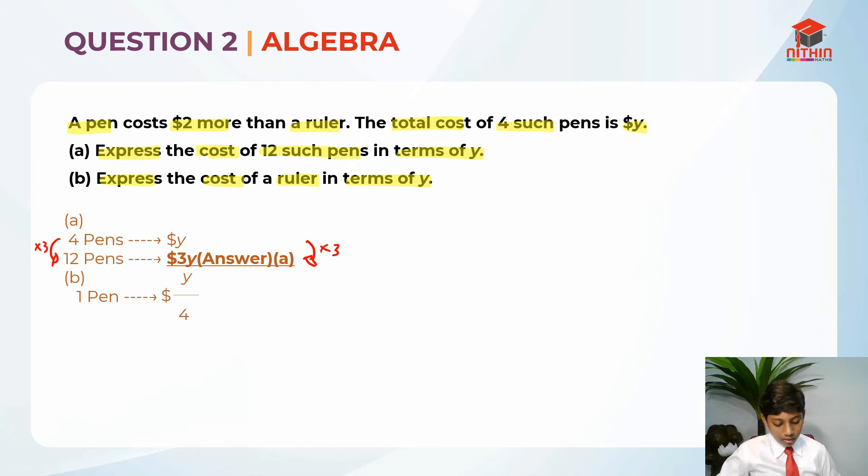We know that a pen is $2 more, right? So, the answer should be Y over 4 minus 2. But, when we are expressing in algebraic form, we do not write like this. We do not write $Y over 4 minus $2. This is wrong.